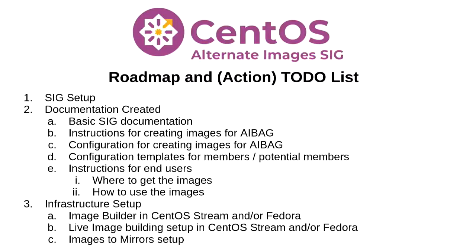AIBAG stands for Alternative Images Build Administrators Group. We need to get the documents set up — two and three can be done at the same time. We're still working on number one, SIG setup. I've got the template written and I'm trying to get it in place. Hopefully we'll make it into the wiki soon. We need instructions for creating images, a place for the scripts to live, and then the infrastructure — we can use Image Builder, we can use Koji. We'll use whatever we can get.